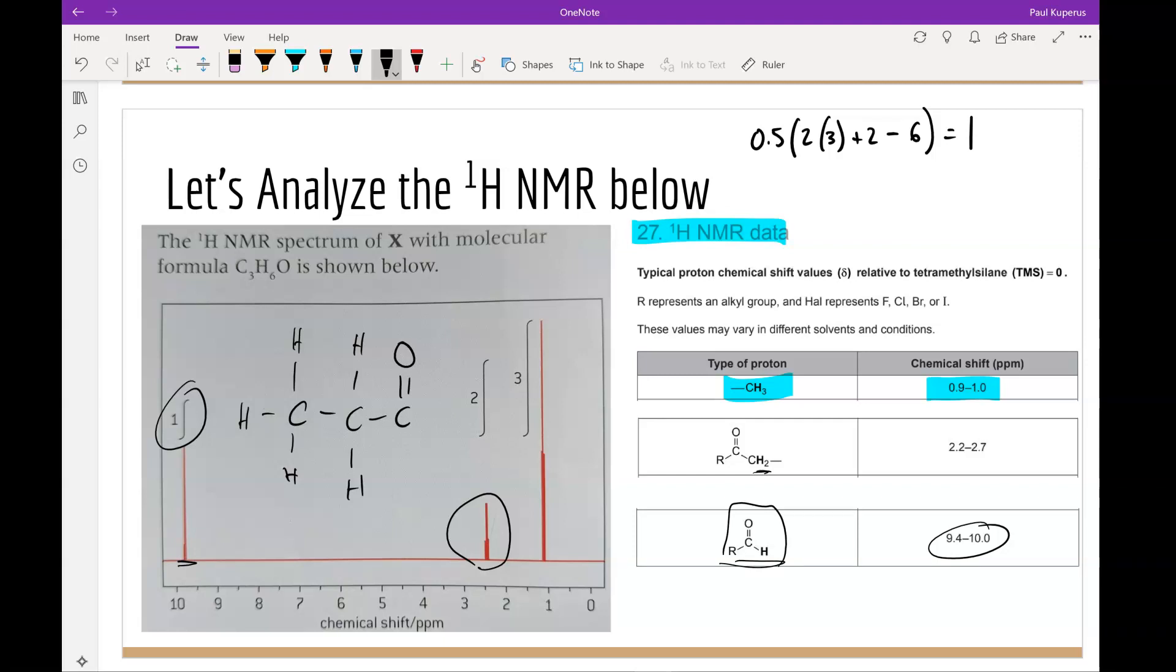So if I put this H here, it matches nicely with this peak. This CH2 matches nicely with that peak. My CH3 matches nicely with that peak. So I can determine from the HNMR spectra what this molecule actually is.